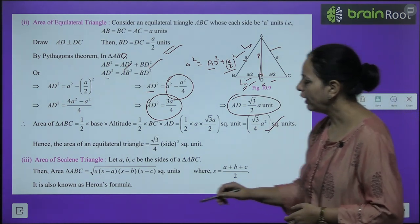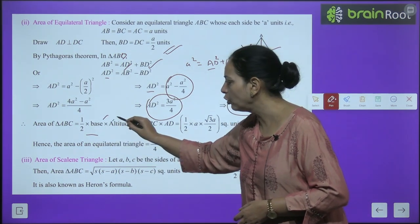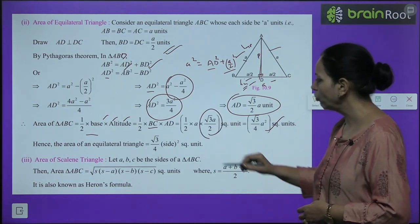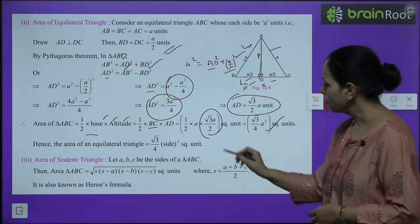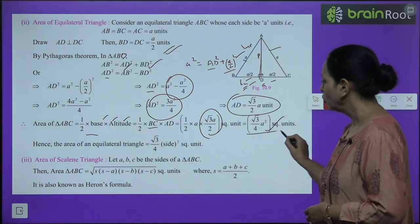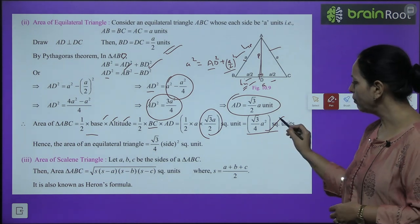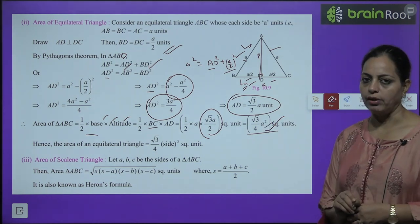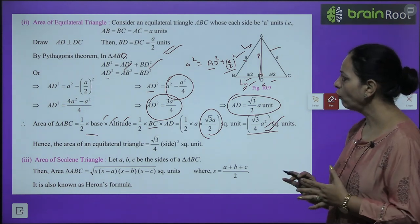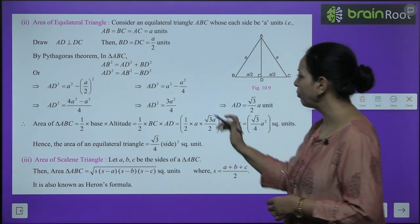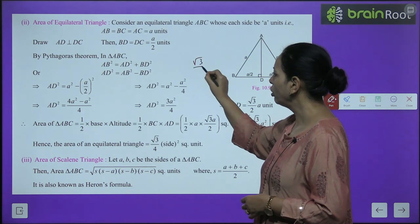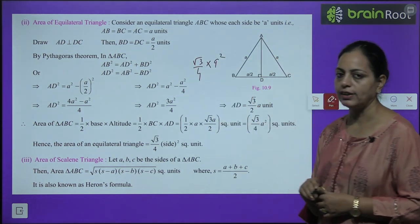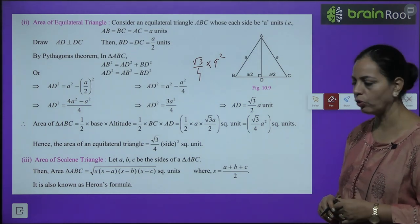So whenever you need to find the area of an equilateral triangle, use: area = (√3/4) × a². For example, if the side is 9, compute (√3/4) × 9² = (√3/4) × 81. Keep this formula in mind.